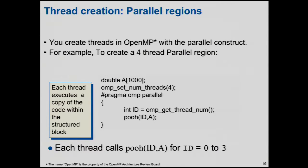Let's go through exactly what a parallel region does. The only way to create threads in OpenMP is with a parallel region. Here I have a very simple program: I have an array declared outside my parallel region, statically asking for 1,000 elements. I call the library function omp_set_num_threads and request four threads. Then I have pound pragma OMP parallel to create a parallel region. Inside, I call int id equals omp_get_thread_num — that returns an identifier for each thread — and then I call my function pooh with id and that array.